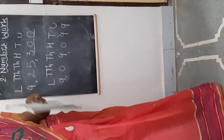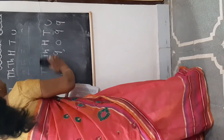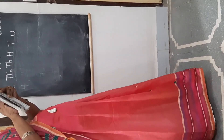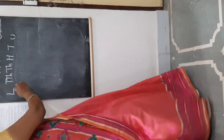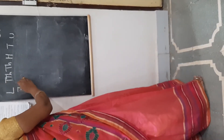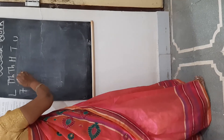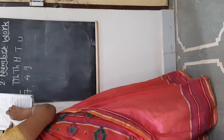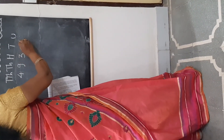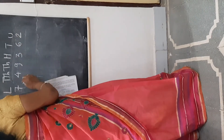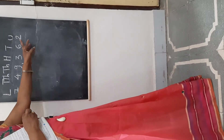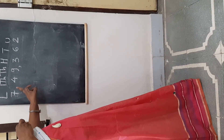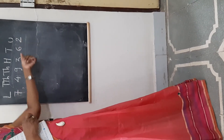The 5th example is 7,49,362. How many lakhs? 7 lakh. Then 49,000: 4 comes at the 10,000 place and 9 at the 1000 place. Remember, the first comma is always after the 1000 place, and the second comma is after the lakh place when counting from the unit side.